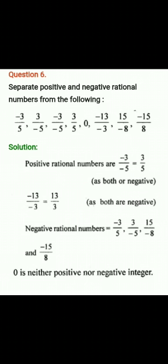Now Question 6: Separate positive and negative rational numbers from the following: -3/5, 3/-5, -3/-5, 3/5, 0, -13/-3, 15/-8, -15/8.